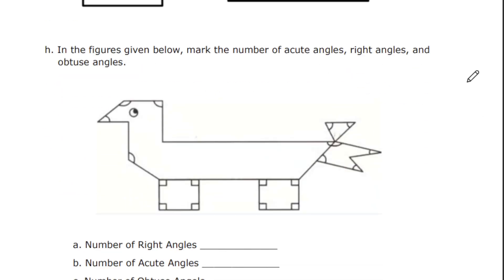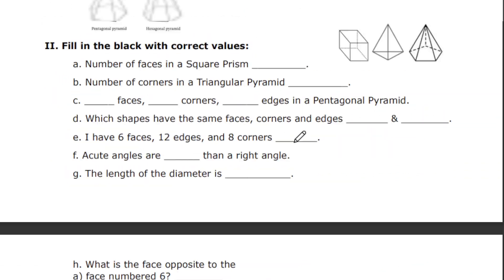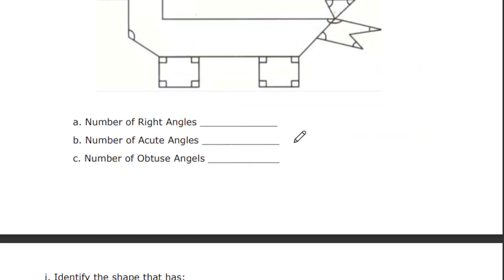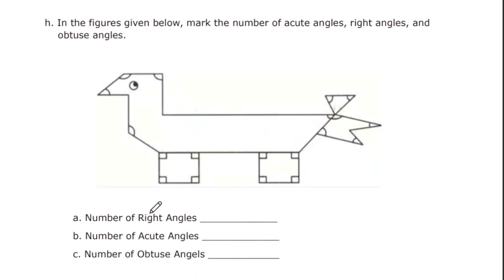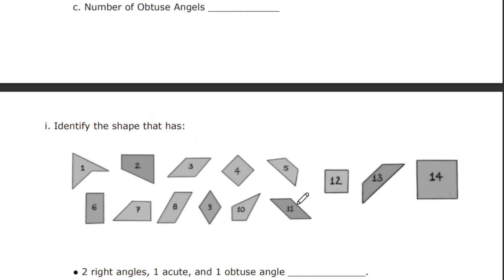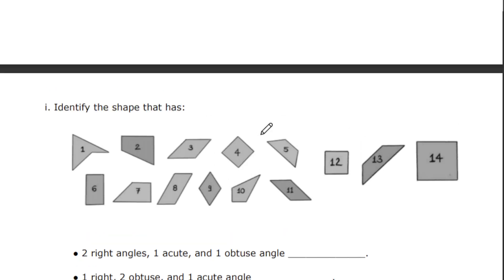Next one, it's an important question, students. These type of image drawing questions will come. All the questions which I framed are going to be important questions for your exam. This question is your 5 mark question. In the figure given below, mark the number of acute angles, right angles and obtuse angles. Number the right angles, number the acute angles, number the obtuse angles. Identify the shape. This is exactly your book-based question. I'm completing this video.